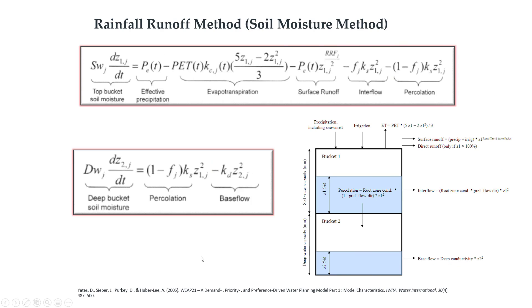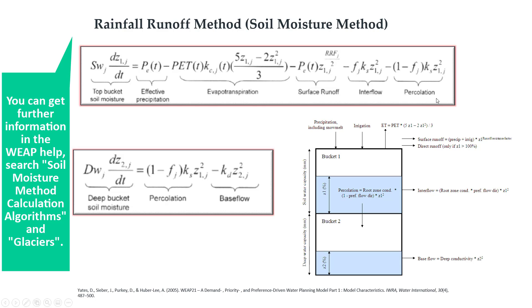We see on this slide the mathematical model that has the soil moisture method. As you can see, it is a water balance between inflows and outflows, where the difference between the in and out at each of the two layers represents the moisture changes in the root zone and the deep zone.